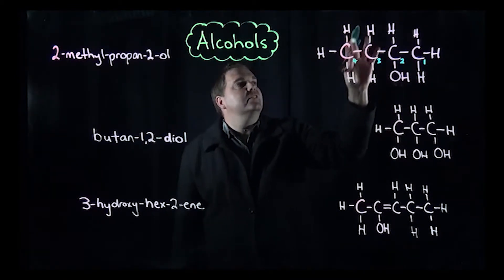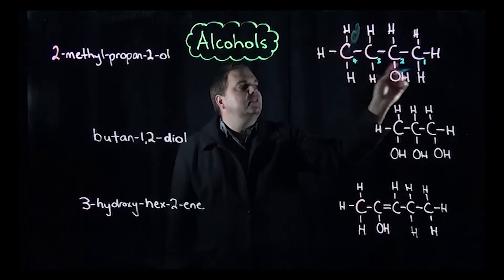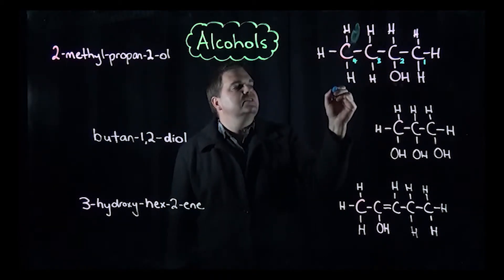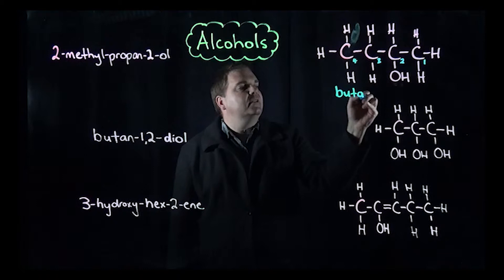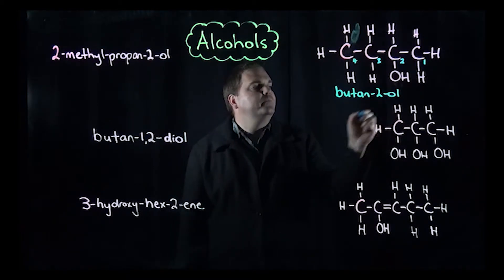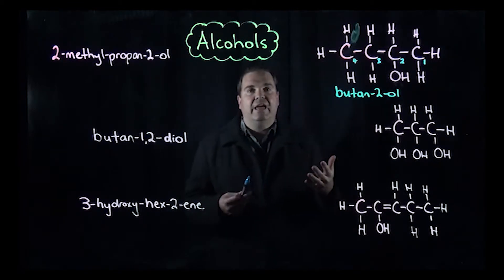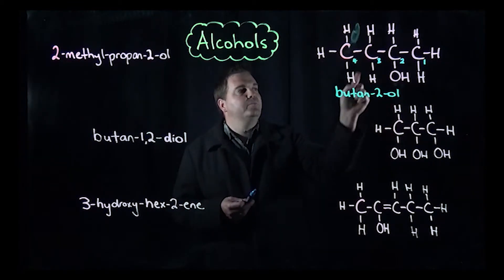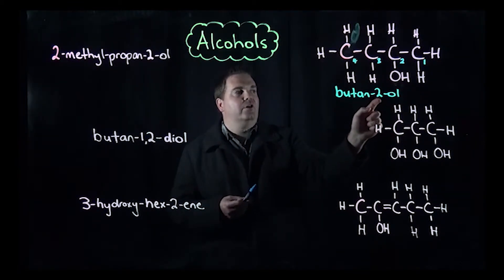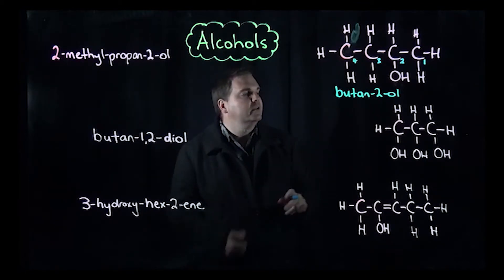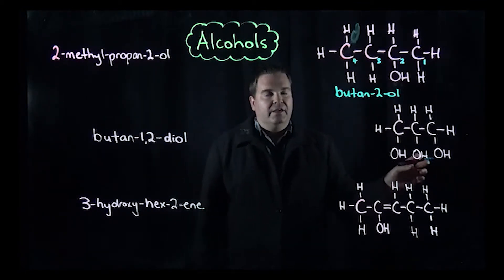Because there's four and the alcohol group is on the second, this is butan-2-ol. Our alcohol functional group, when it's the only one there, gives us our name by itself on the end, the OL. Four carbon atoms in the chain, the alcohol is on the second one.